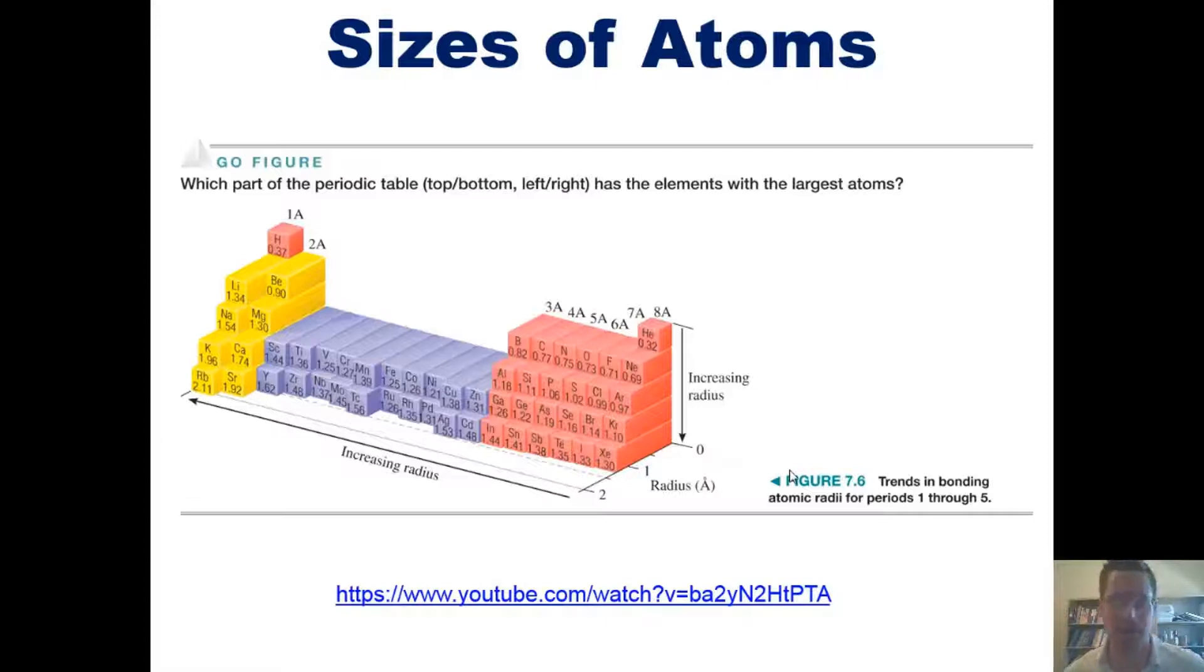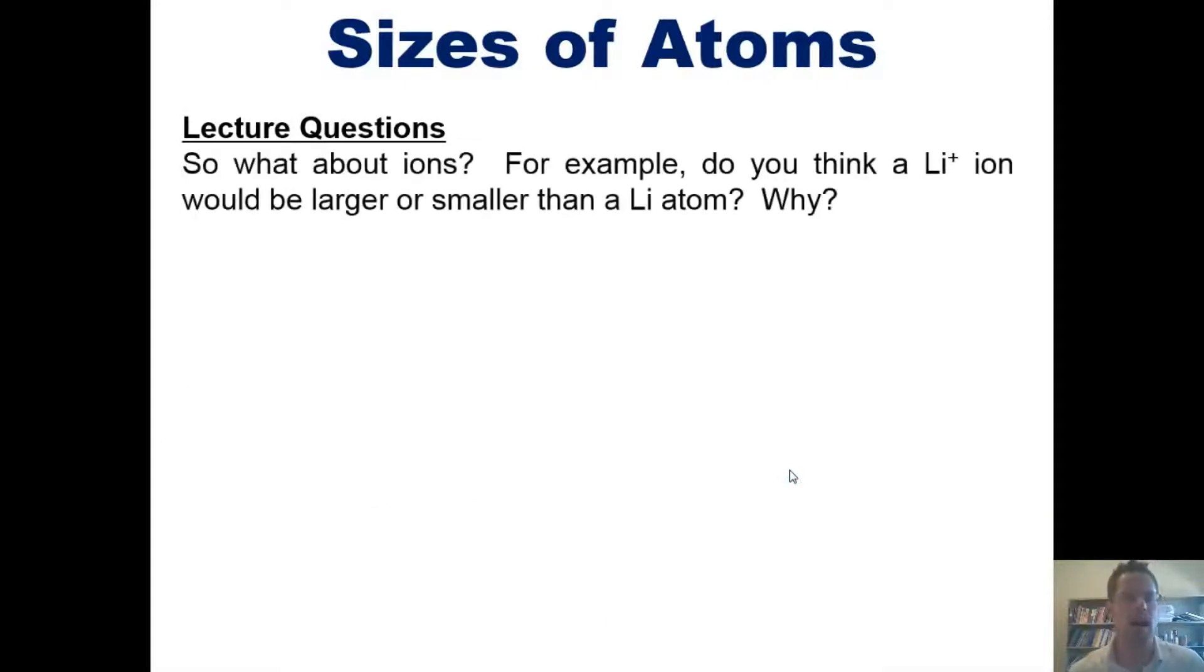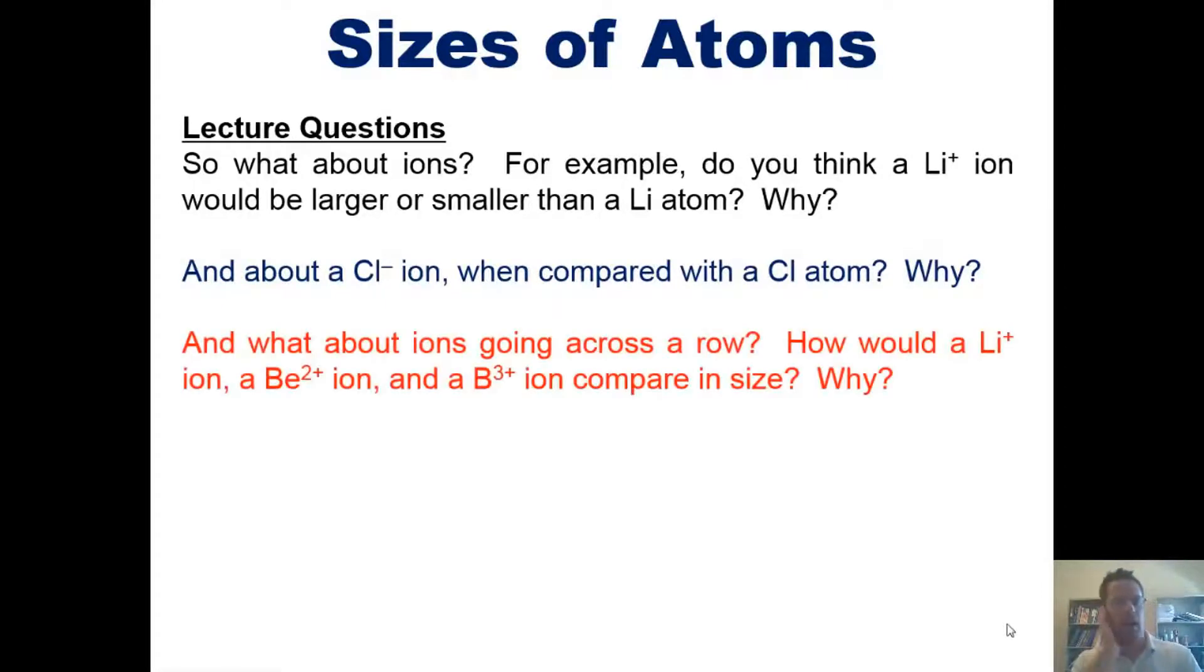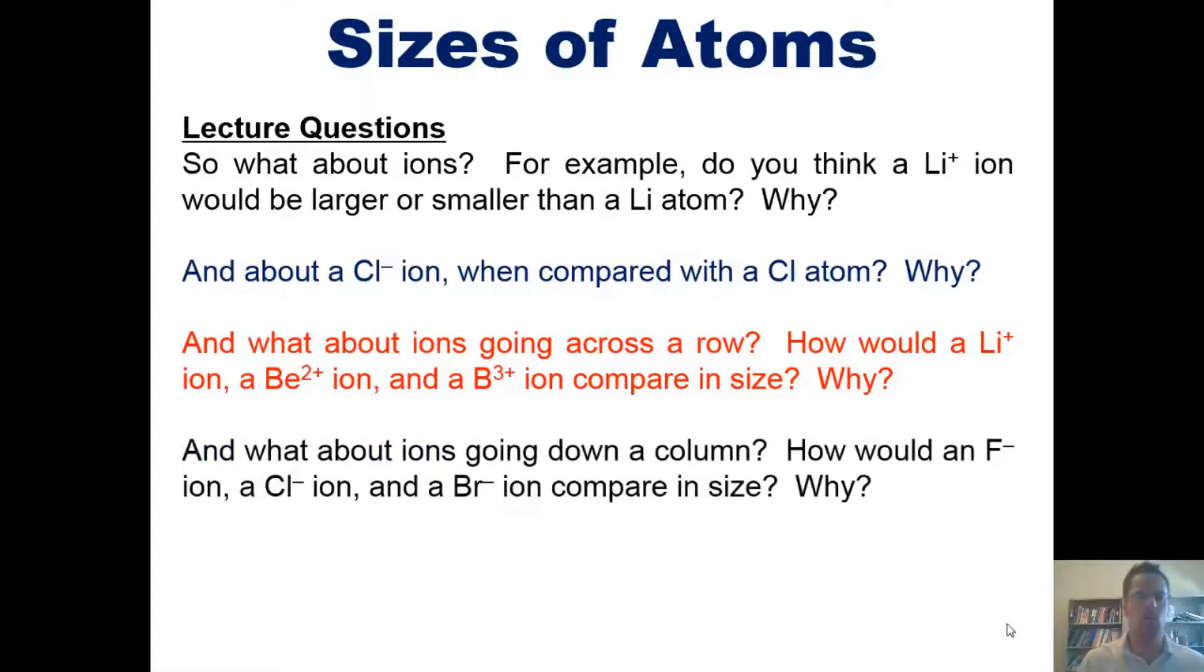This begs the question: what about ions? For example, do you think a lithium cation would be larger or smaller than a lithium atom, and why? And what about a chloride ion when compared to a neutral chlorine atom, and why? And what about ions going across a row? For example, how would a lithium cation compare to a beryllium 2+ cation and to a boron 3+ cation in size, and why? And what about going down a column? For example, how would a fluoride compare to chloride compared to a bromide in size, and why?